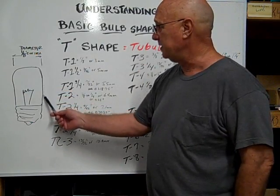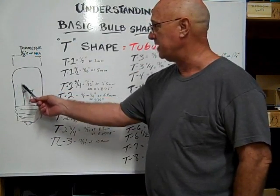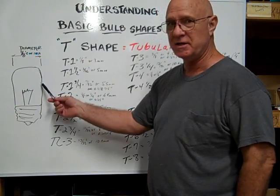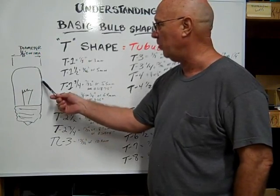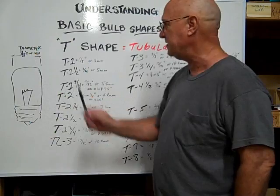That is the dimension across the diameter of the glass envelope, the globe of the bulb. It's measured in eighths of an inch.